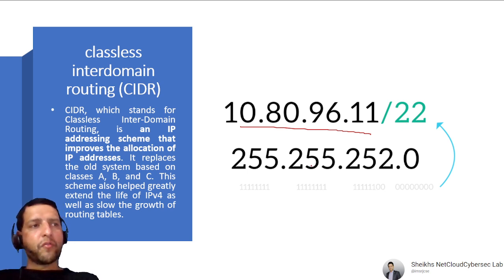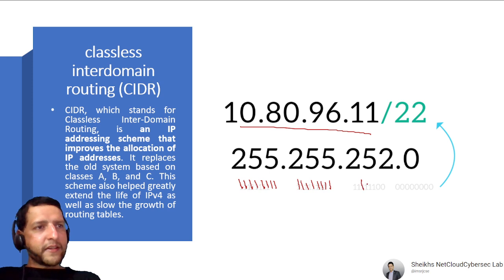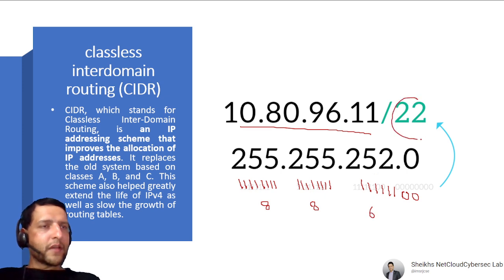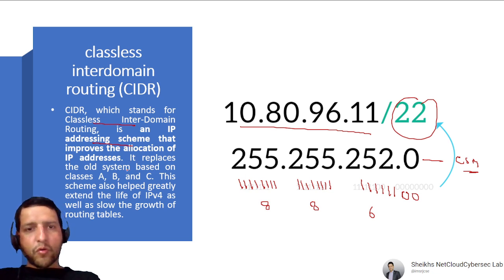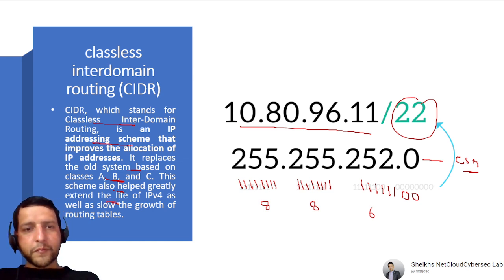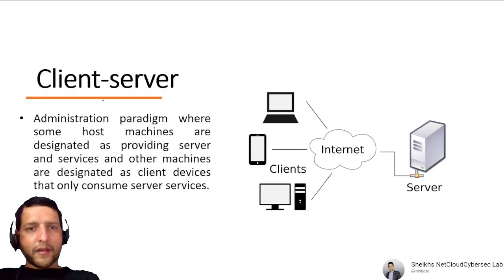CIDR (Classless Inter-Domain Routing) represents a subnet mask using slash notation, where the slash number indicates the count of ones in the subnet mask. For example, /22 means there are 22 ones (8+8+6). CIDR is an IP addressing scheme that improves the allocation of IP addresses, replacing the old class-based scheme. It also helps extend the life of IPv4 and slow the growth of routing tables.